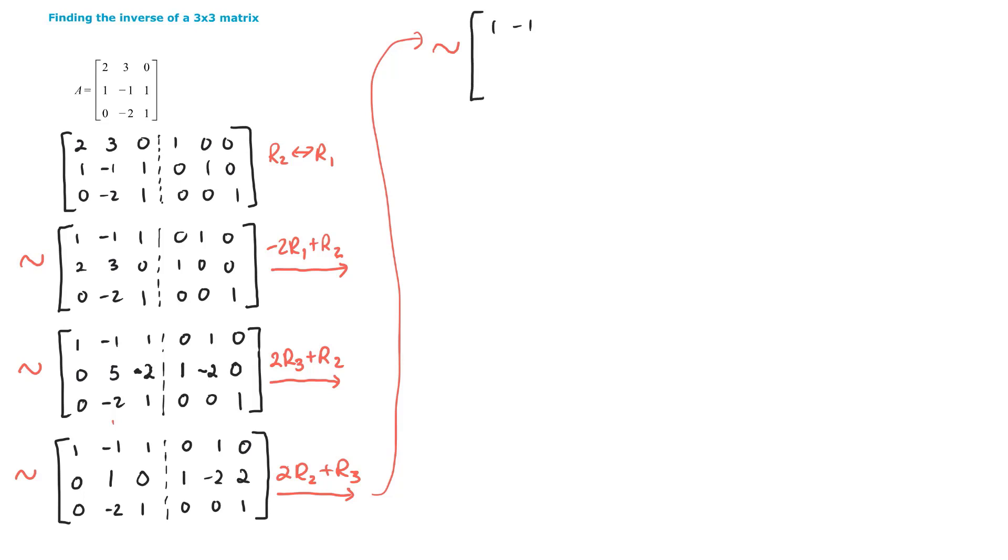This is row equivalent to. Row 1 and row 2 does not change. 1, negative 1, 1. 0, 1, 0. 0, 1, 0. 1, negative 2, 2. Now row 3 does change. We got a 0, and we got a 0 here, and we got a 1 here, which is gorgeous. And now we have a 2 here, negative 4 here, and 5 here.